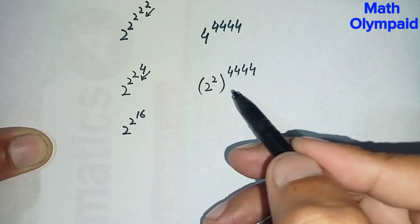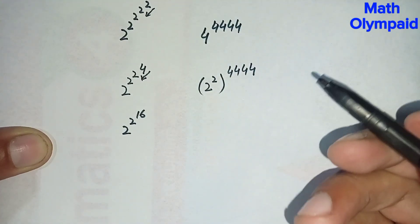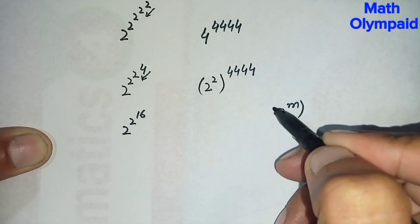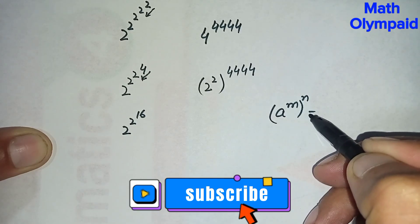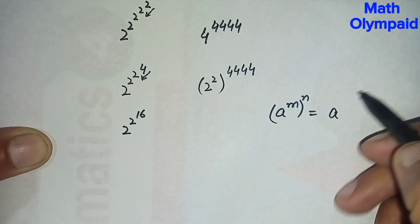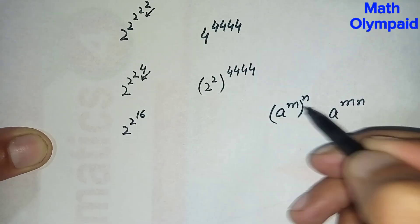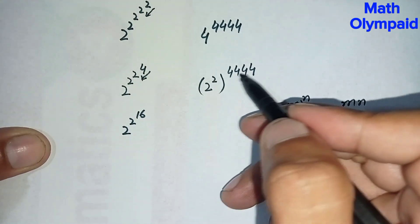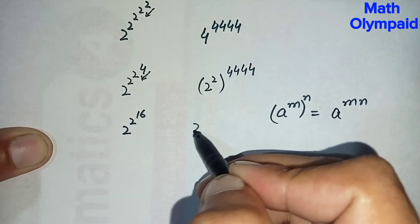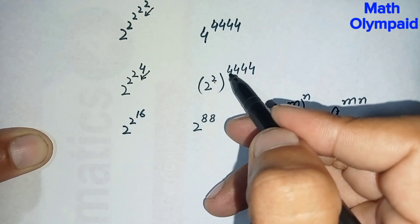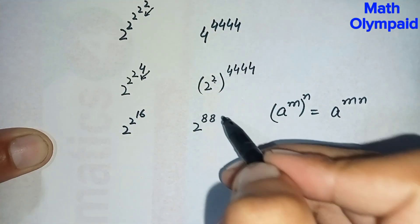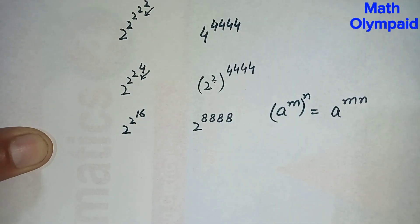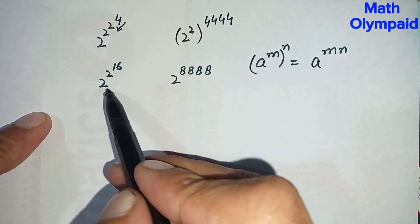Here we will use the famous exponential property: l raised to power m, whole raised to power n, can also be written as l raised to power m times n — the powers multiply with each other. So here we multiply 2 with each power, and it becomes 2 raised to power 2 times 4 is 8, giving us 2 raised to power 8 on the right hand side repeated terms.